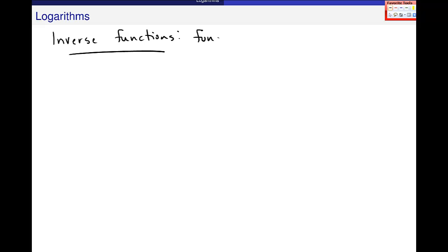Inverse functions are functions that undo each other. You know quite a few of them, and I'll give you a pretty standard example. One function is the function x squared. I know that if I need to get rid of or undo something that's squared, I take the square root. These are functions that undo each other.